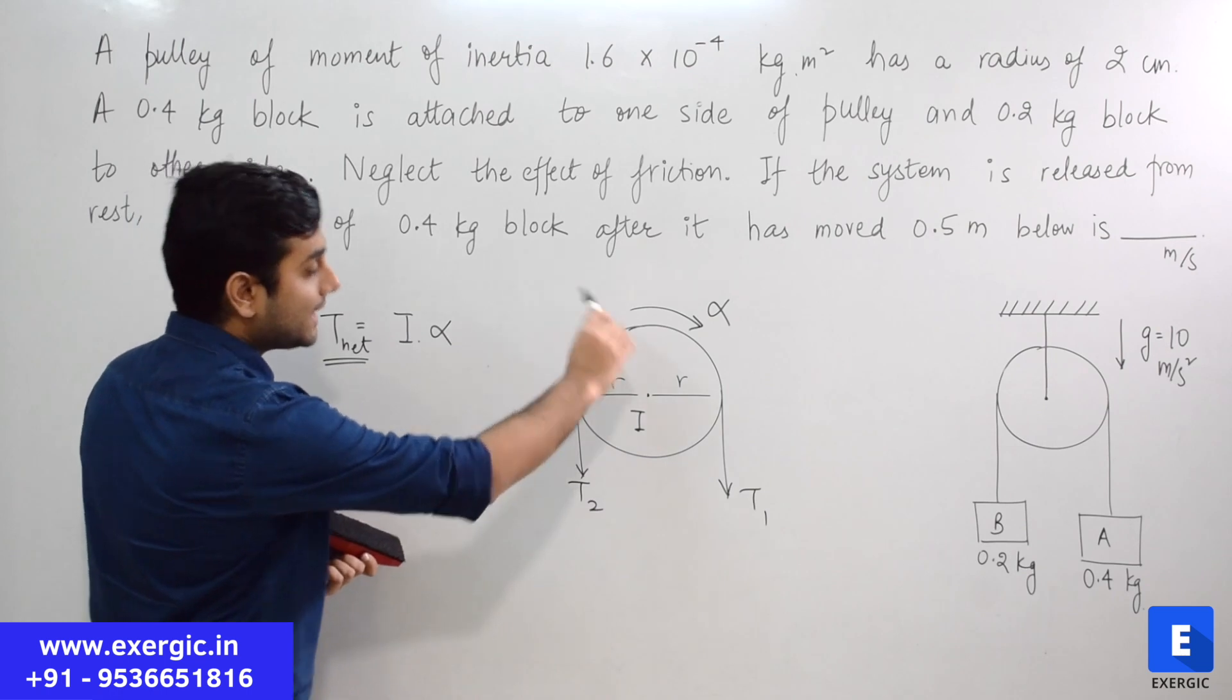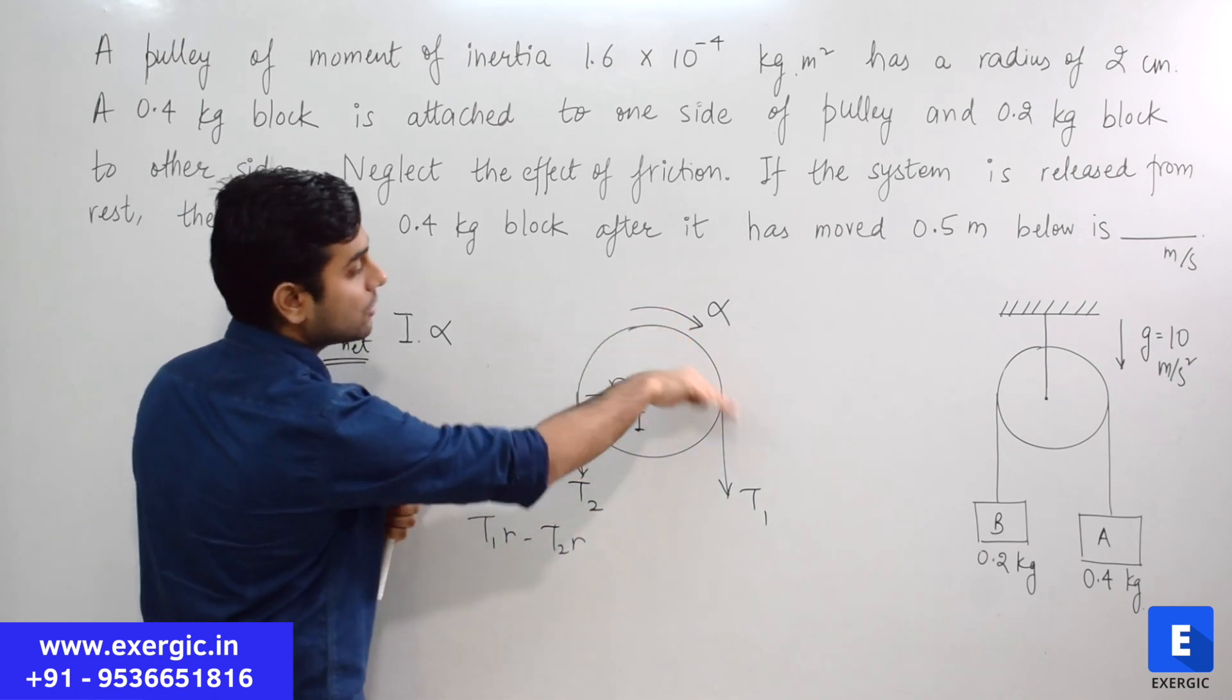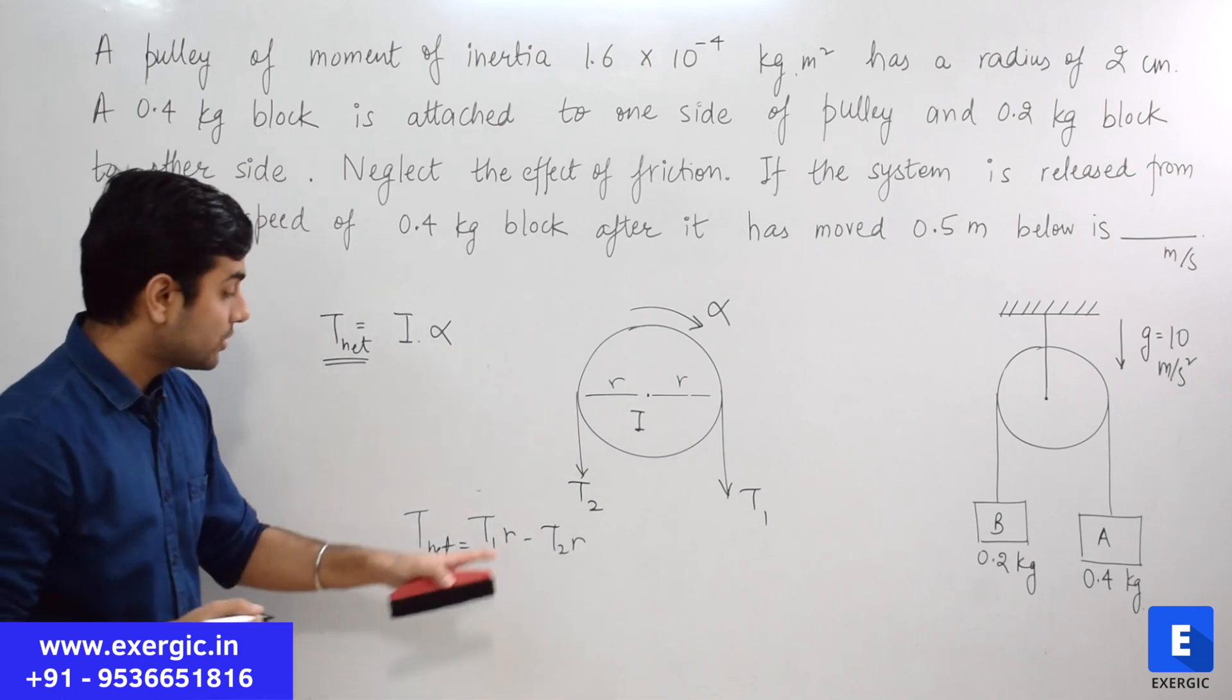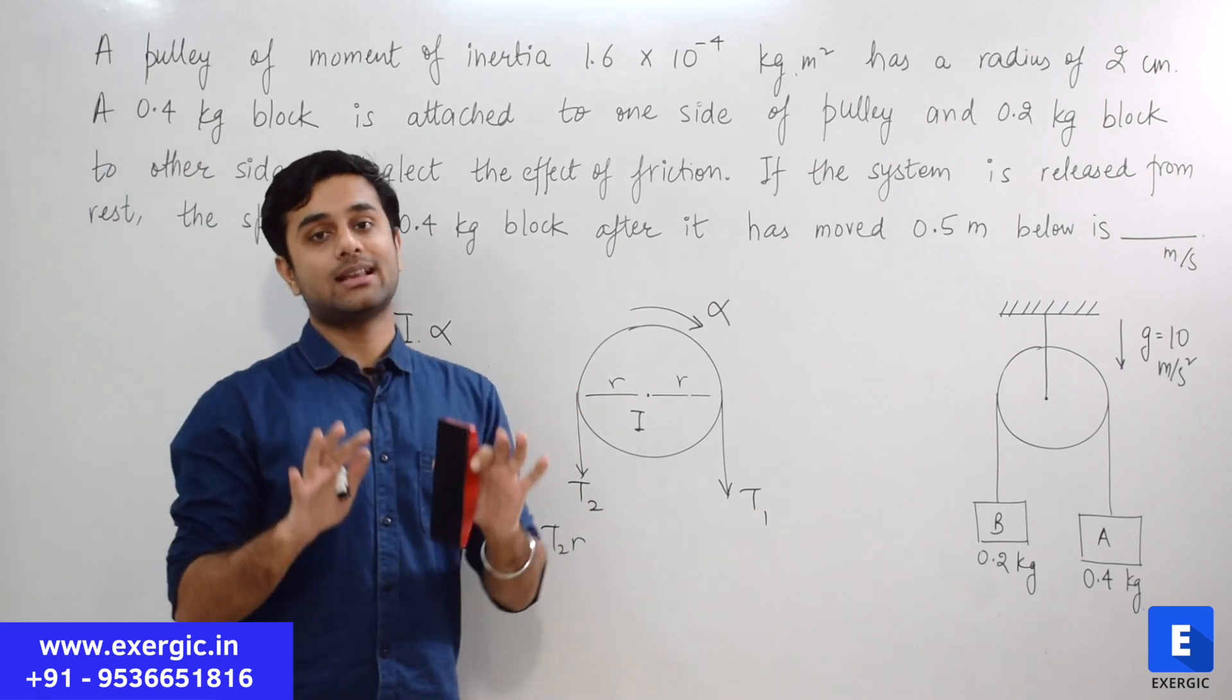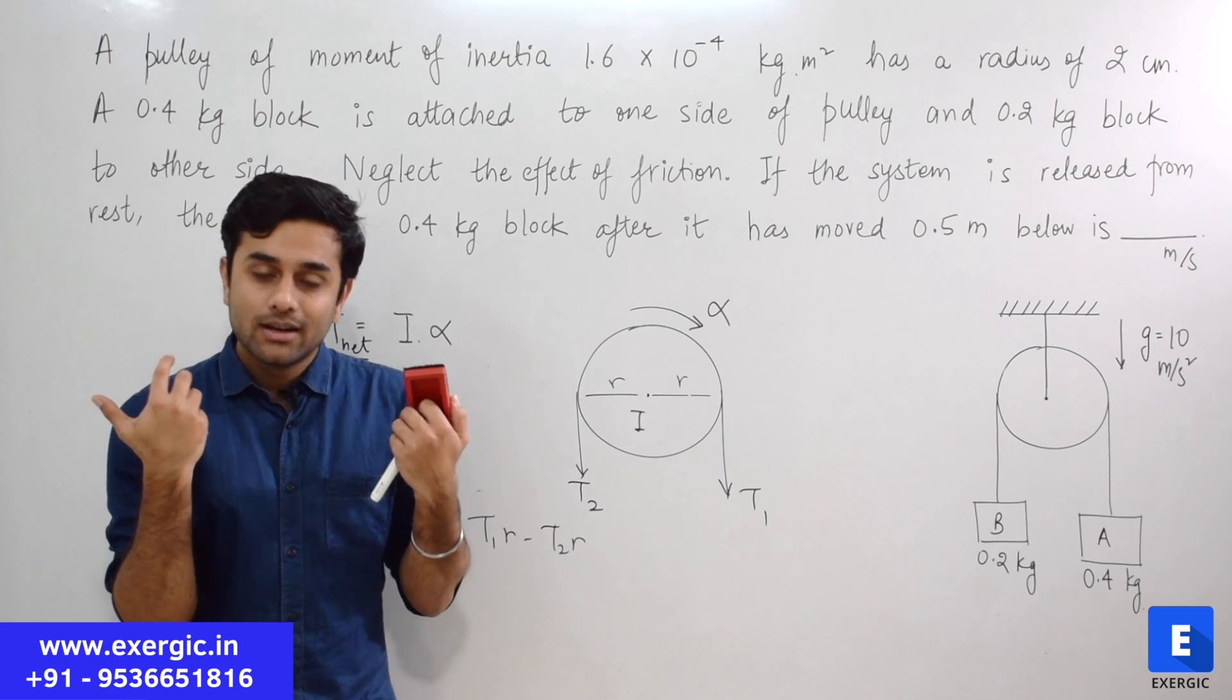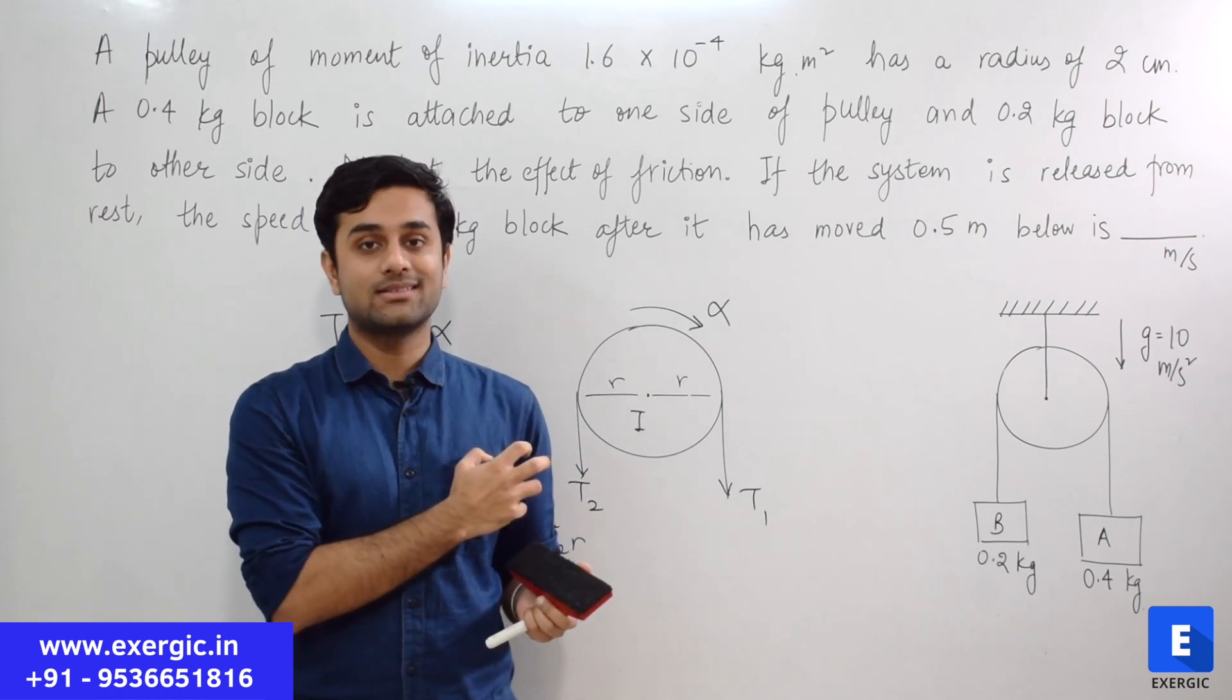Right now clockwise moment of T is getting cancelled by counterclockwise moment of T about the center. But if this is T1, this is T2, that will not cancel. Now net torque in the direction of acceleration will be T1R minus T2R. T1R clockwise along the direction of alpha, T2R counterclockwise opposing the alpha. This is your net torque now which is not zero because T1 and T2 are not equal.